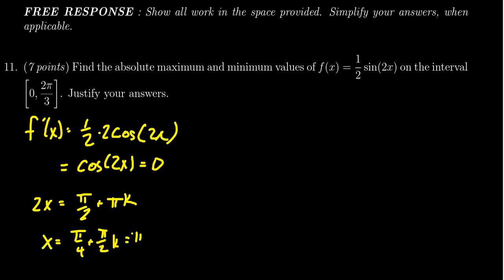So for example, we have solutions at π/4, then 3π/4 would be the next possible one, and then adding another π/2 to that we get 5π/4. We can stop once we get past 2π/3, and notice that 5π/4 is too large.